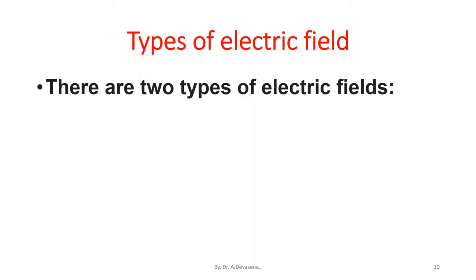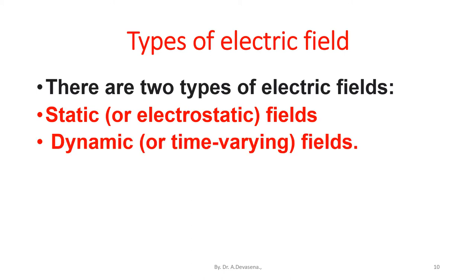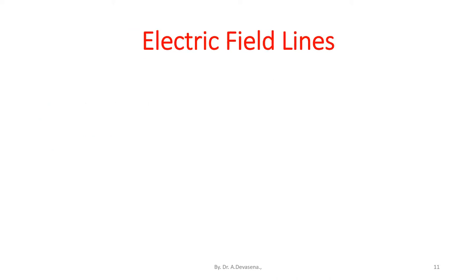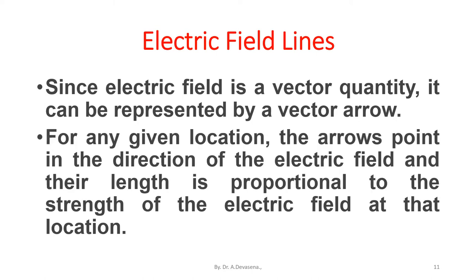There are two types of electric fields: static or electrostatic fields, and dynamic or time-varying fields. Since electric field is a vector quantity, it can be represented by a vector arrow. For any given location, the arrows point in the direction of the electric field and their length is proportional to the strength of the electric field at that location.